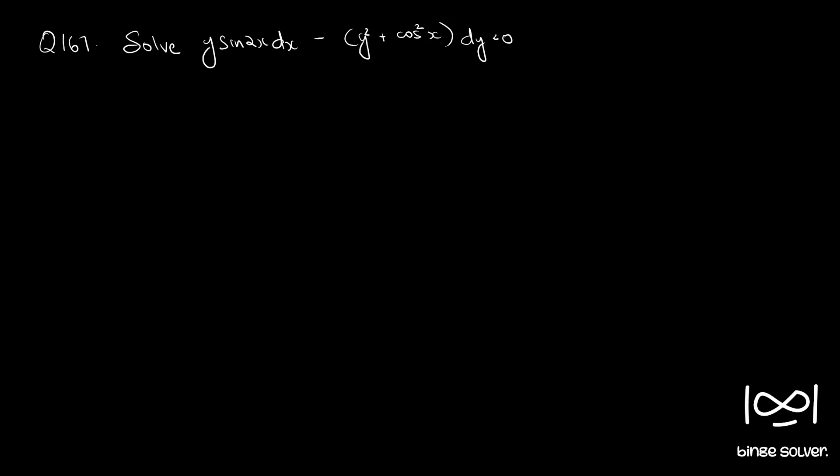Question number 167. Solve y sin 2x dx minus y square plus cos square x dy equal to 0. Similar question.